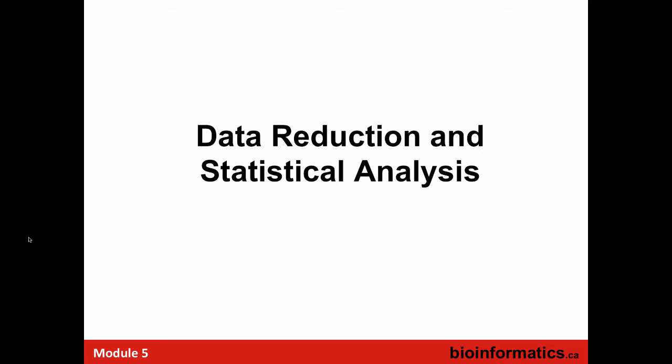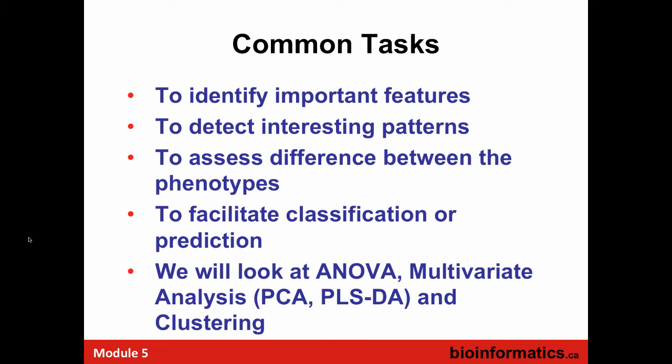We've now gone through that red section and can dive into the more interesting stuff — how to identify important features, detect patterns, look at differences between phenotypes, and how to classify. We're going to use ANOVA, look at multivariate analysis, and do some clustering. After you've uploaded and cleaned your data, you're in a position to do univariate analysis, multivariate analysis, significant feature identification, clustering, and classification. Within each of those there are different clickable options depending on your data type.